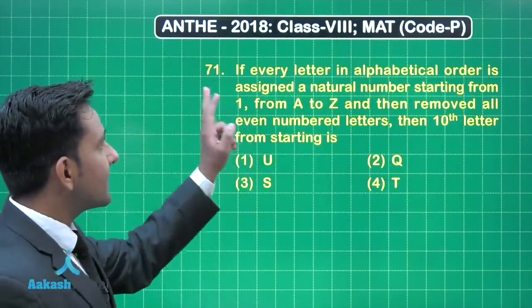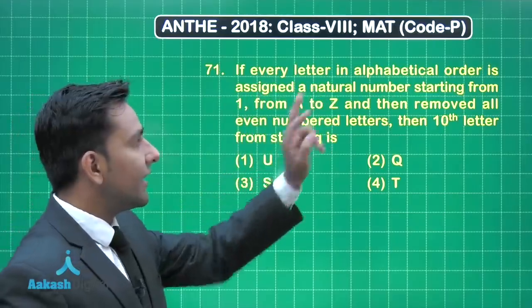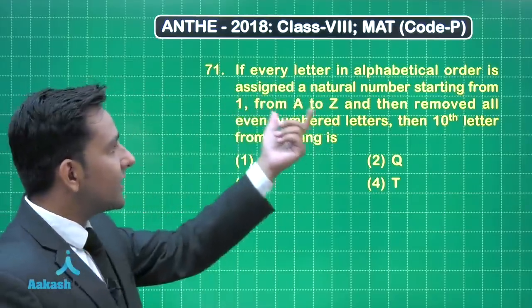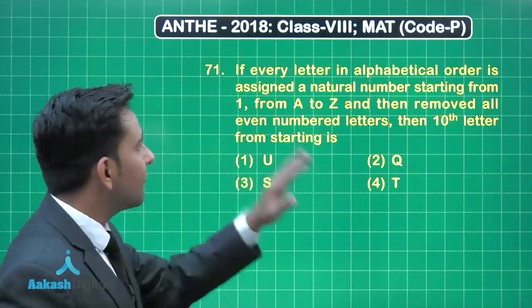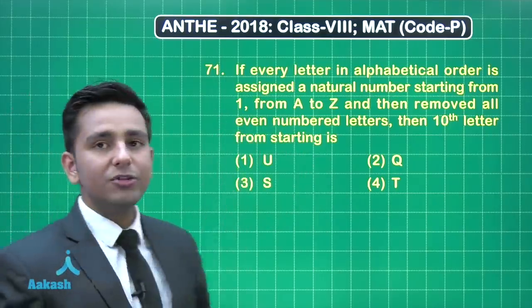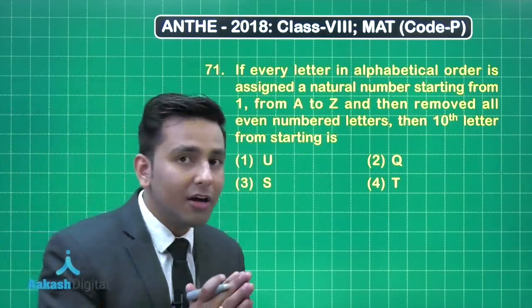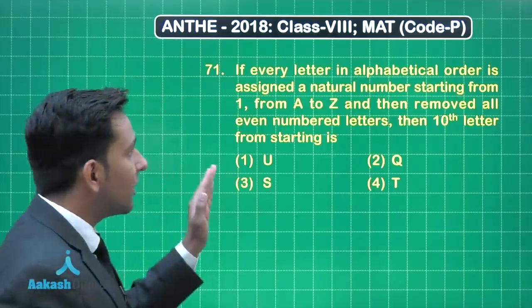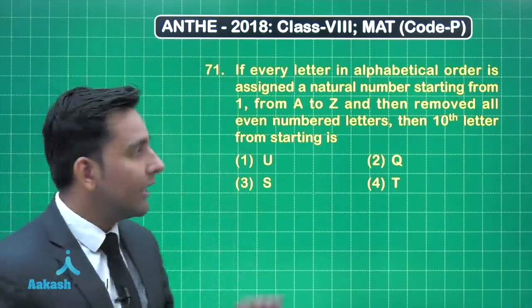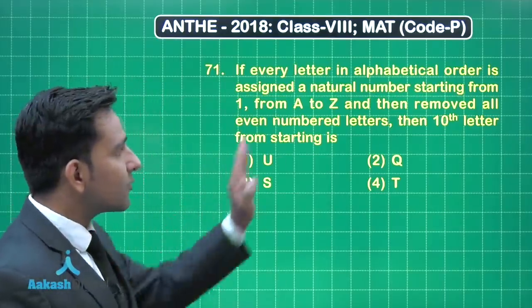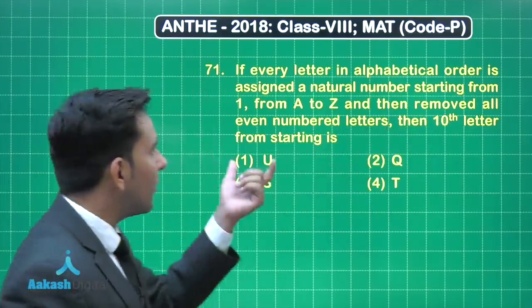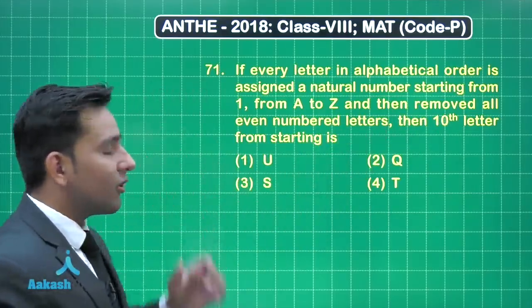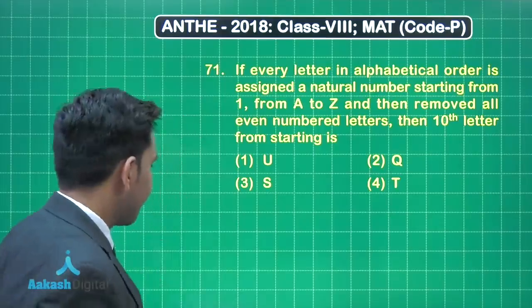This question states: if every letter in the English alphabet is assigned a natural number starting from 1 — that means from A to Z, the English alphabet letters are assigned natural numbers from 1 to 26 — then remove all even-numbered letters. The tenth letter from the starting is what? Now let's come to the solution.